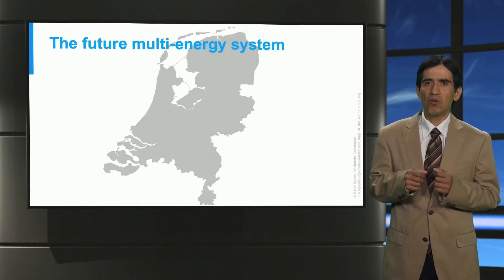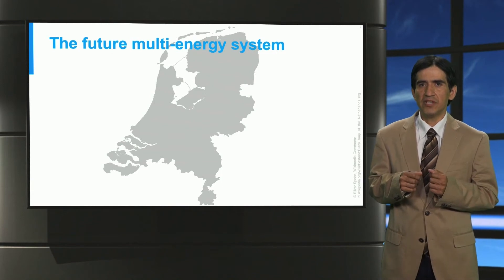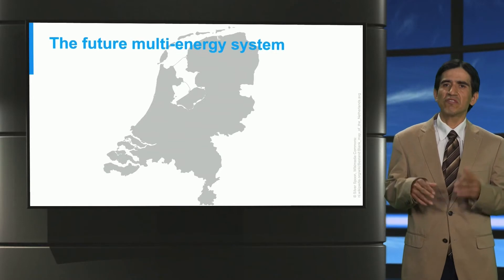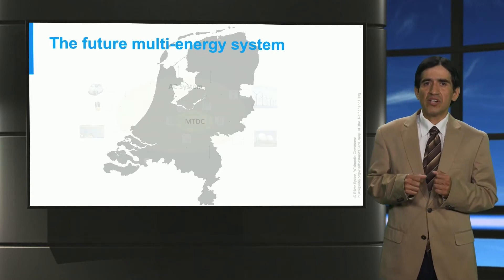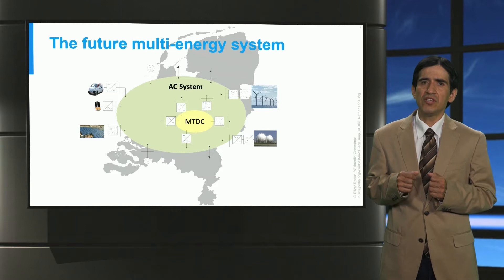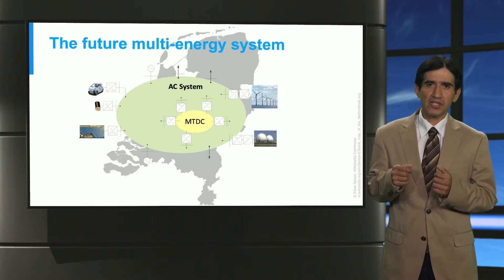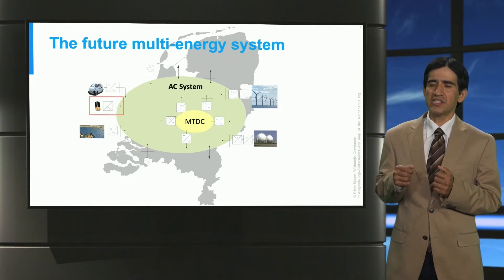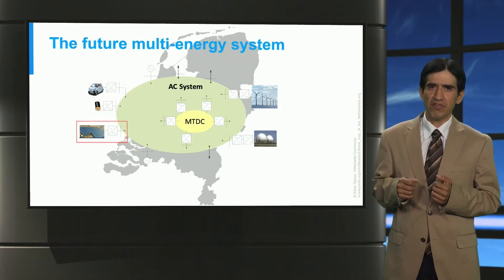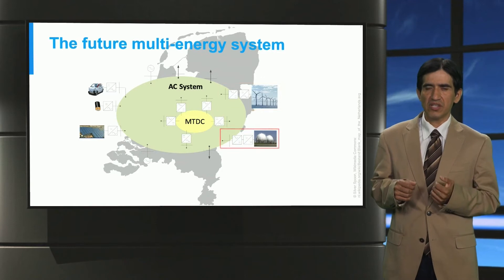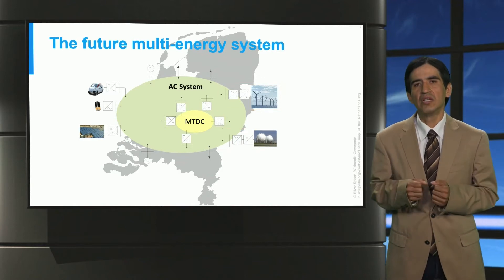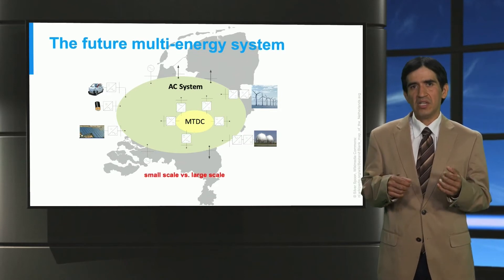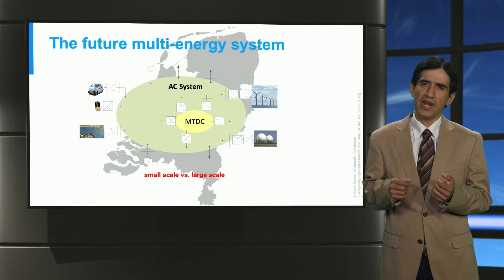In the near future, more or less in the year 2050, the future multi-energy system predominantly will be composed of AC and DC technologies, which are applied for integration of different users. For instance, power electronic converters in the grid will constitute interfaces to multiple energy systems like electrolysis for hydrogen, compressed air energy storage, electrical batteries, and so on. Also, the scale aspect, small scale versus large scale, is significant in the future multi-energy system.